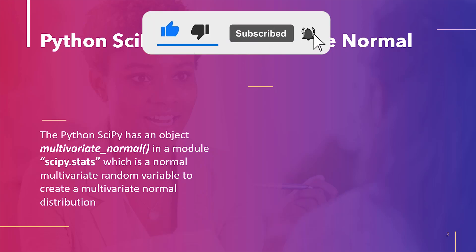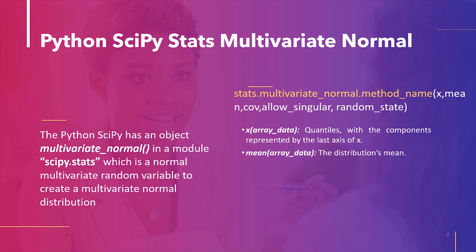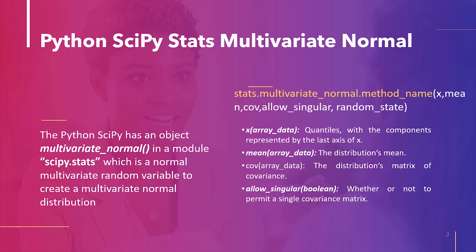The syntax of the method is as follows. The parameters are: x, which represents quantiles with the last axis of x denoting the components; mean, which is the mean of the distribution — by default it is 0; cov, which is the covariance matrix of the distribution — by default it is 1.